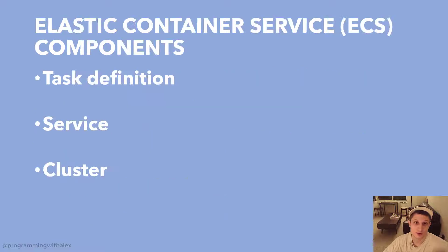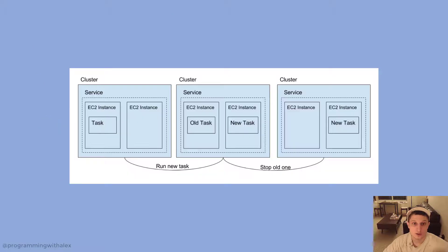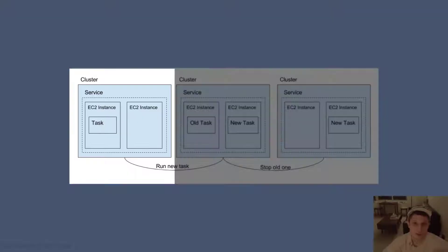Elastic Container Service has three major components: the task definition, the service, and the cluster. There's an optional application load balancer that we're going to get into later. Let's start with the diagram before we jump into how each of the components work.